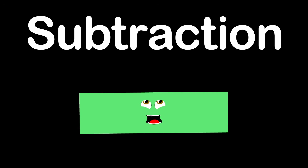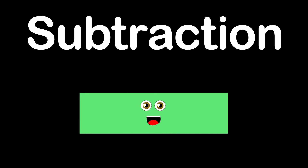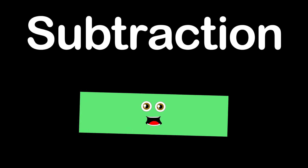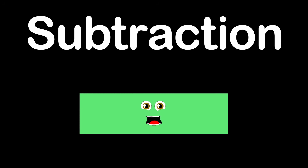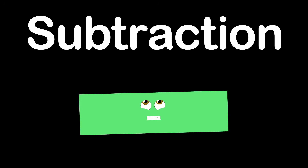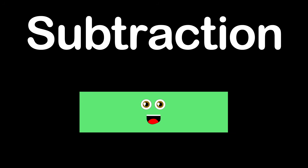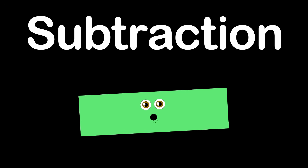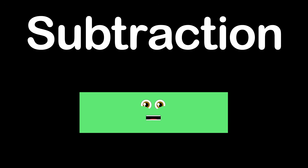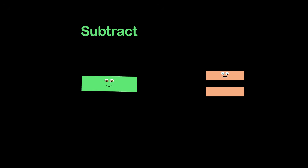I am subtraction, and this is my action. I take a number or an amount away from another with satisfaction. I'm subtraction, and I'll show you what I do when you have a whole number. I decrease a number's size, it's true. You can subtract anything with a subtraction and an equal symbol. Here's some examples with numbers — we'll try to keep it real simple.